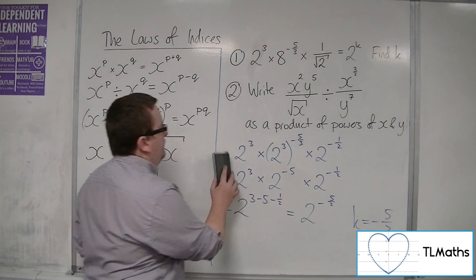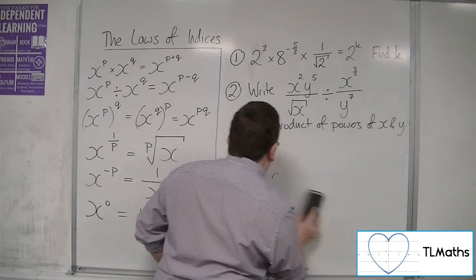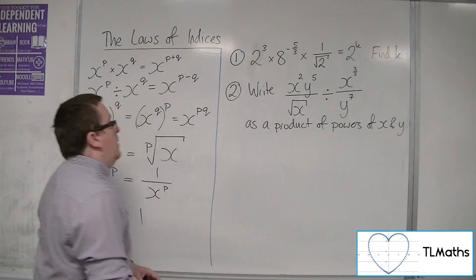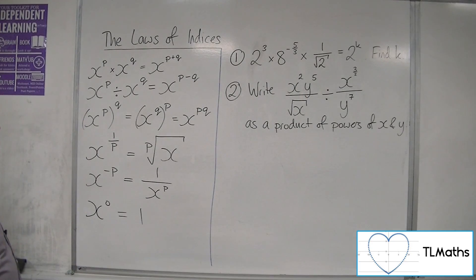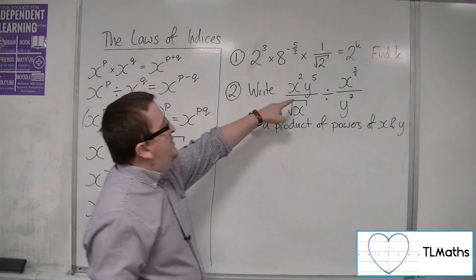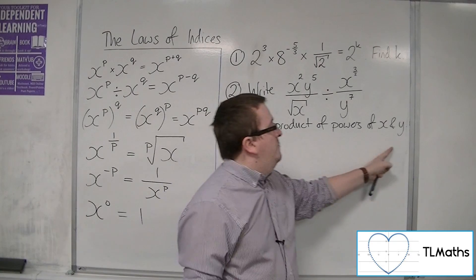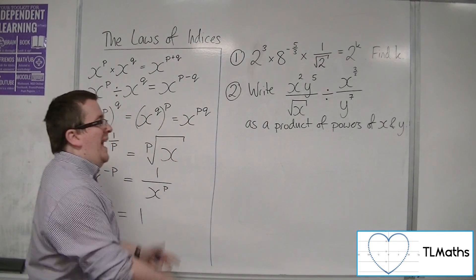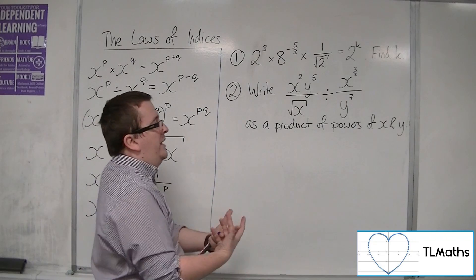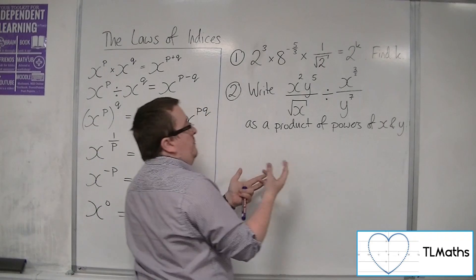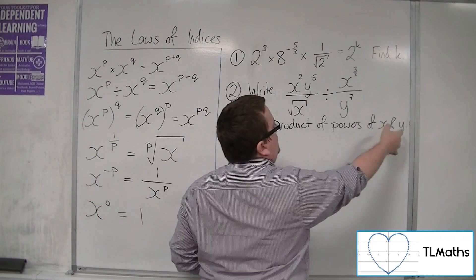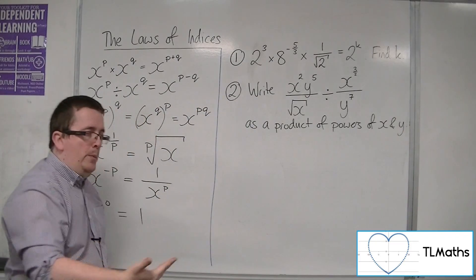Now in the second problem, we've got write x squared y to the 5 over root x, divided by x to the 3 halves over y to the 7, as a product of powers of x and y. Product means times, so we're going to have x to the something times y to the something. That's how we want to write it.